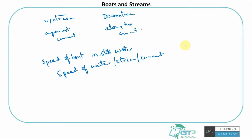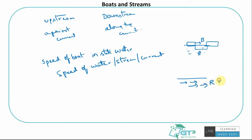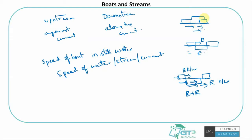Imagine the water is not moving and there's a boat moving at speed b km/h — after an hour, the boat covers b kilometers. Now if the water is also flowing in the same direction at speed r km/h, and the boat moves at b km/h, after an hour it covers b plus r kilometers, because the river flow helps the boat. Even if the boat were idle, the river flowing at r km/h would push it r kilometers in an hour.